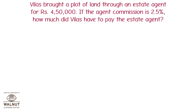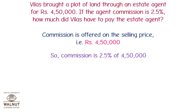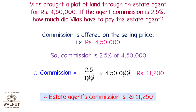Villas bought a plot of land through an estate agent for Rs. 4,50,000. If the agent's commission is 2.5%, how much did Villas have to pay the estate agent? Commission is offered on the selling price of Rs. 4,50,000. Commission = 2.5/100 × 4,50,000 = Rs. 11,250. The estate agent's commission is Rs. 11,250.